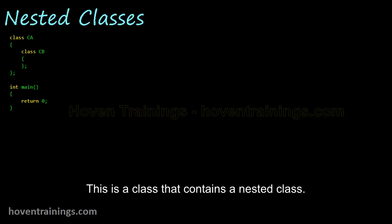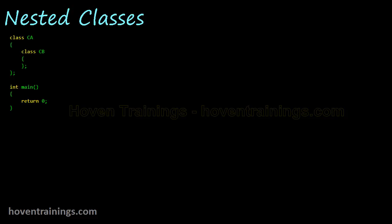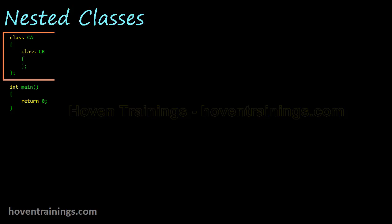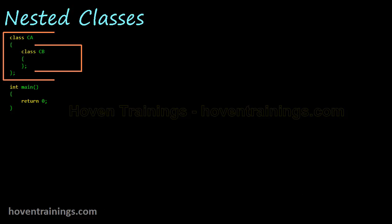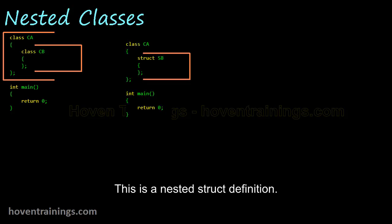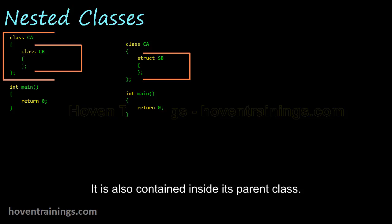This is a class that contains a nested class. This is the outer class, and this is the nested class — it is defined inside the outer class. This is a nested struct definition, and it is also contained inside its parent class.